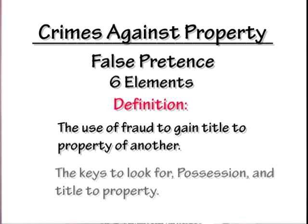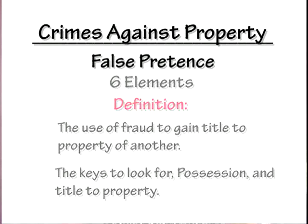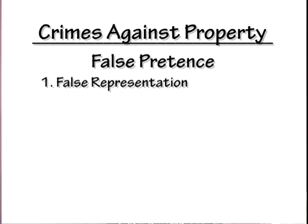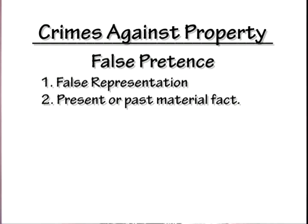The key is to look for possession and title to property — specifically when they take possession and title to another's property. The six elements begin with: number one, there is a false representation. Number two, it is a false representation of a present or material fact.